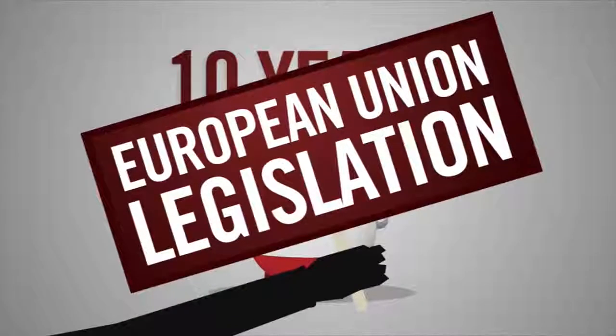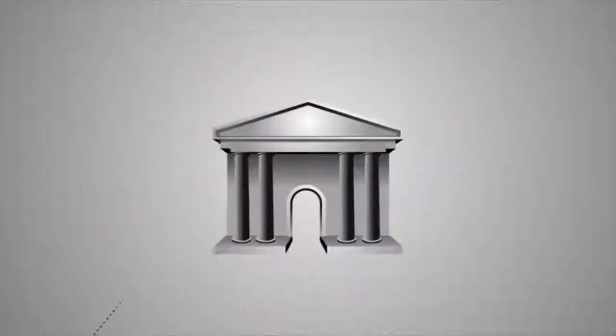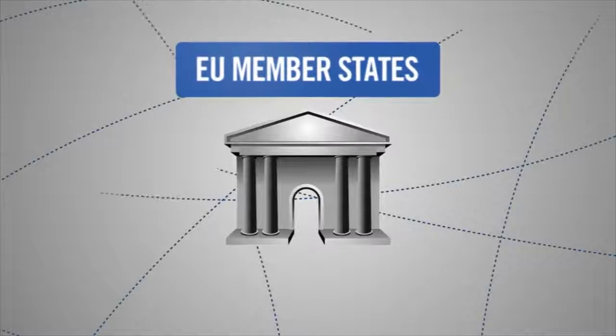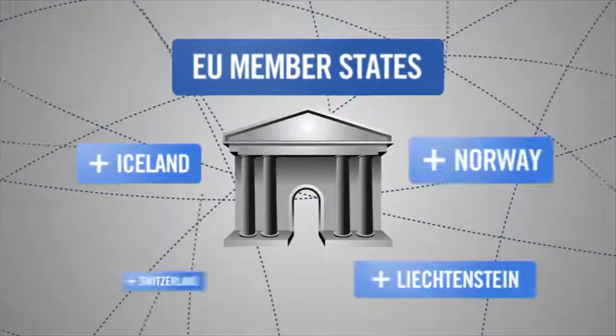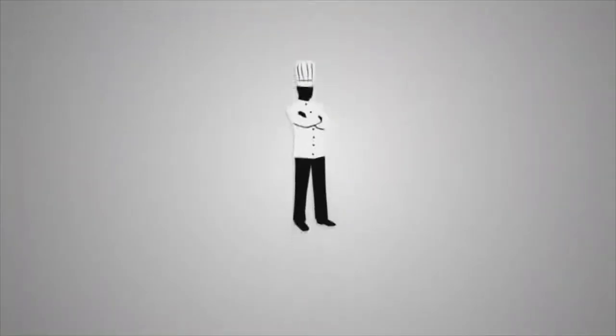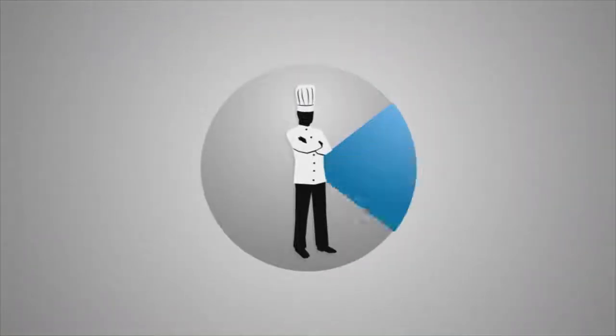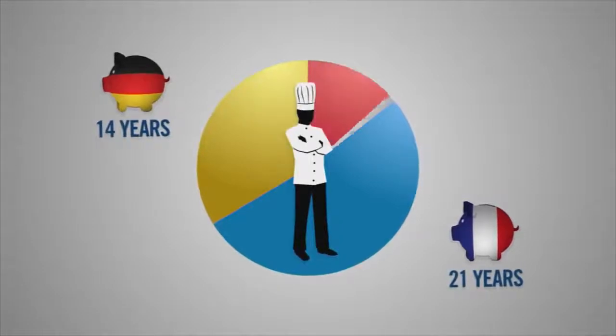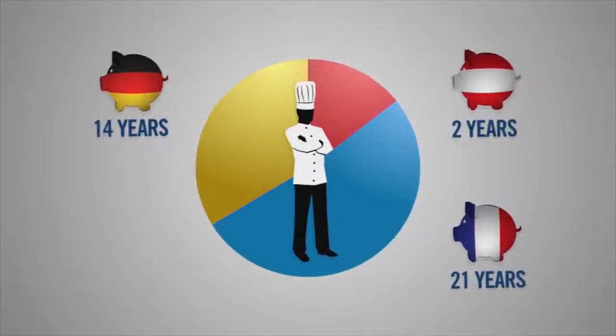Fortunately, Johann's rights are protected by EU social coordination rules that oblige countries to include periods worked in any EU country, plus Iceland, Liechtenstein, Norway and Switzerland. In Johann's case, Austrian institutions will acknowledge his contribution periods in France and Germany and pay him an amount proportional for the two years he worked in Austria.